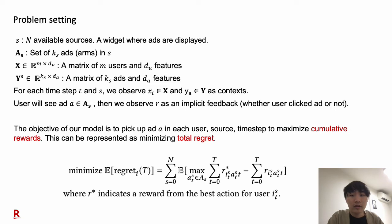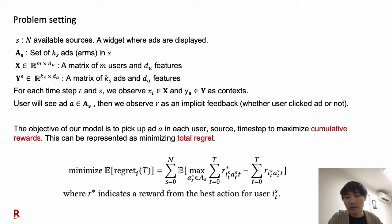I'll talk about the problem setting next. We have N available sources, and each source corresponds to a widget where ads are displayed. In each source, we have a set of ads. Large A sub S is the set of ads in a source. Large X is a matrix of users and user features. Large Y superscript S is a matrix of ads and ad features. For each time step and source, we first observe contextual features. Users will see an ad, and then we observe whether the user clicked the ad or not as implicit feedback. The objective of our model is to pick the best ad for each user and source at each time step to maximize cumulative rewards, which can be represented as minimizing total regret.